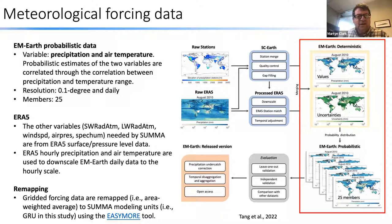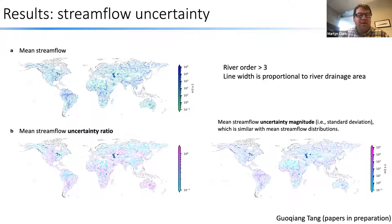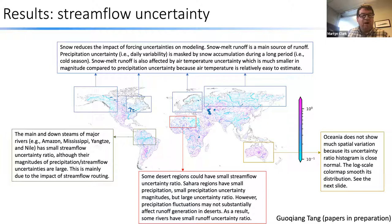Gochang is showing the mean runoff and the mean runoff uncertainty ratio — the ratio of the ensemble spread to the mean runoff — globally. One of the key results is that a lot of the uncertainty is reduced: meteorological uncertainty is reduced in snowmelt-dominated river basins, where uncertainty in individual precipitation events can cancel each other out as we move throughout the accumulation season.